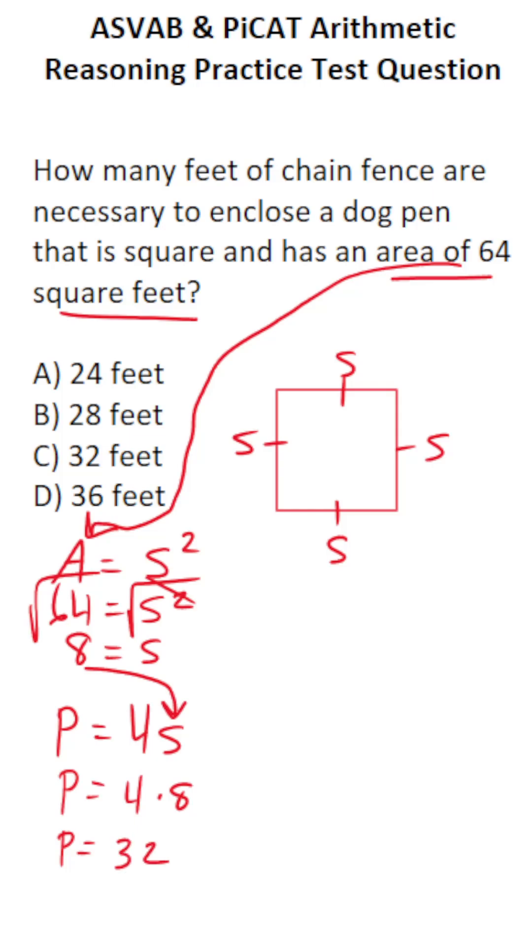So we're going to need C, 32 feet of fence to enclose this dog pen that's in the shape of a square with an area of 64 square feet.